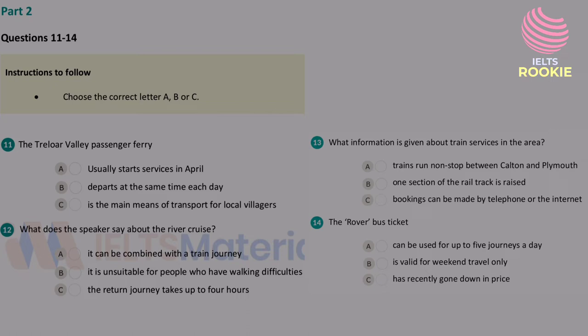The Treloar Valley passenger ferry runs between villages along the river estuary and provides a link with a train station at Barry, which is about ten minutes' walk from the riverside village of Calton. In the past, the river was the main form of transport in the area, and as in the past, today's ferry service operates according to nature. The river estuary is tidal, and so the ferry timetable differs from day to day, according to the times and height of the tide. The ferry is also seasonal, normally running between April and September, depending on the weather.